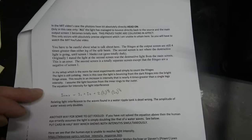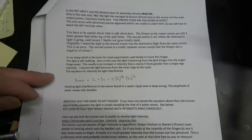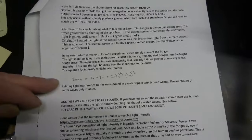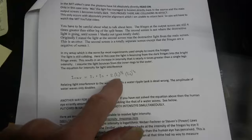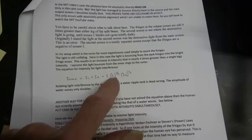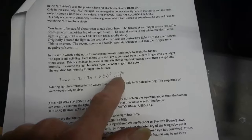The equation for intensity for light interference is this: I max equals I1 plus I2 times 2 times I1 to the half times I2 to the half.